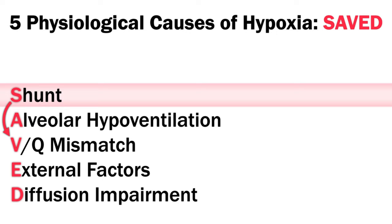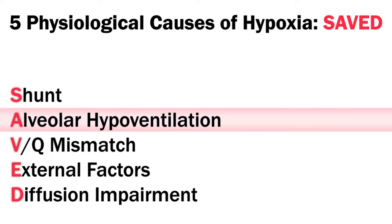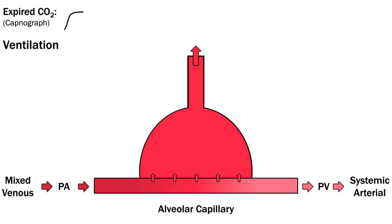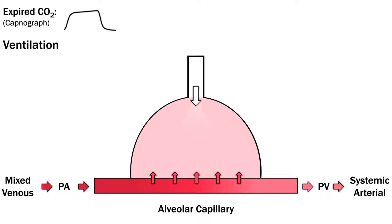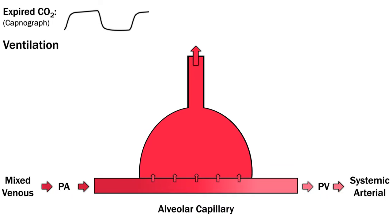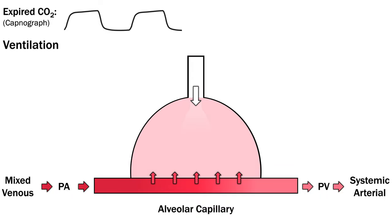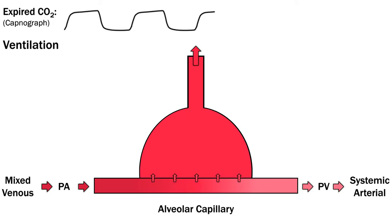Shunt is one extreme of VQ mismatch so we'll cover those together. Instead we'll start by just looking at ventilation. Instead of oxygen we're going to start with carbon dioxide. Carbon dioxide is constantly produced by the body in direct correlation with oxygen consumption. I discuss this in detail in my bioenergetics video.